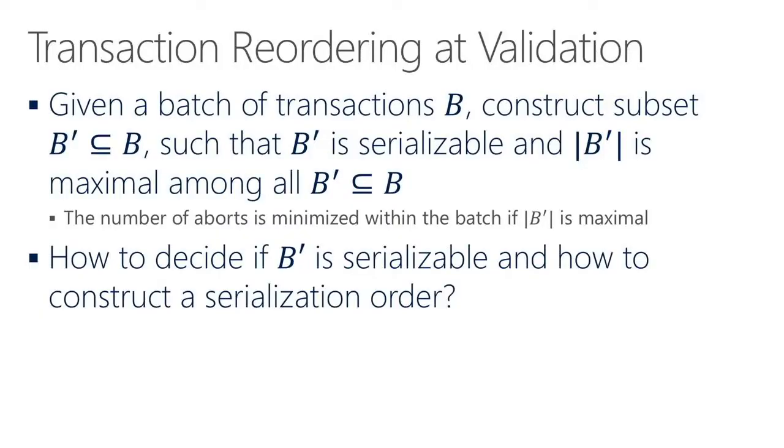At the validation layer, the reordering strategy is less straightforward. The question is: how can we create a serialization order with the least number of aborts given a batch of transactions? Formally, given a batch of transactions B, we want to construct a subset B prime that is serializable — meaning we can serialize transactions in B prime without causing conflict — and the size of B prime is maximum among all such subsets. Maximum size means least number of aborts.